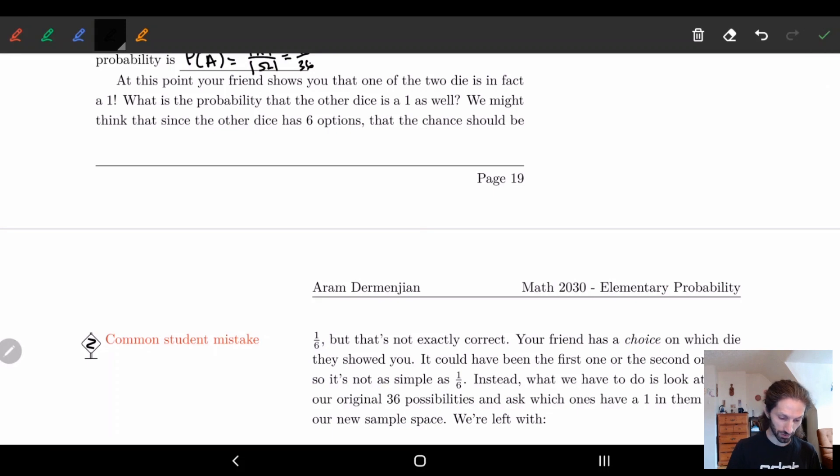And so a common student mistake is to basically think, okay they've shown me one of the dice, and so since I know one of the dice I just have to think about what the other dice is. So the other dice has a one in six chance of being a one. So the probability should just be 1/6. And the problem here is that although that is technically true, it's also technically wrong. Because yes the other dice has a chance of 1/6, but that doesn't mean your probability of having two ones is 1/6.